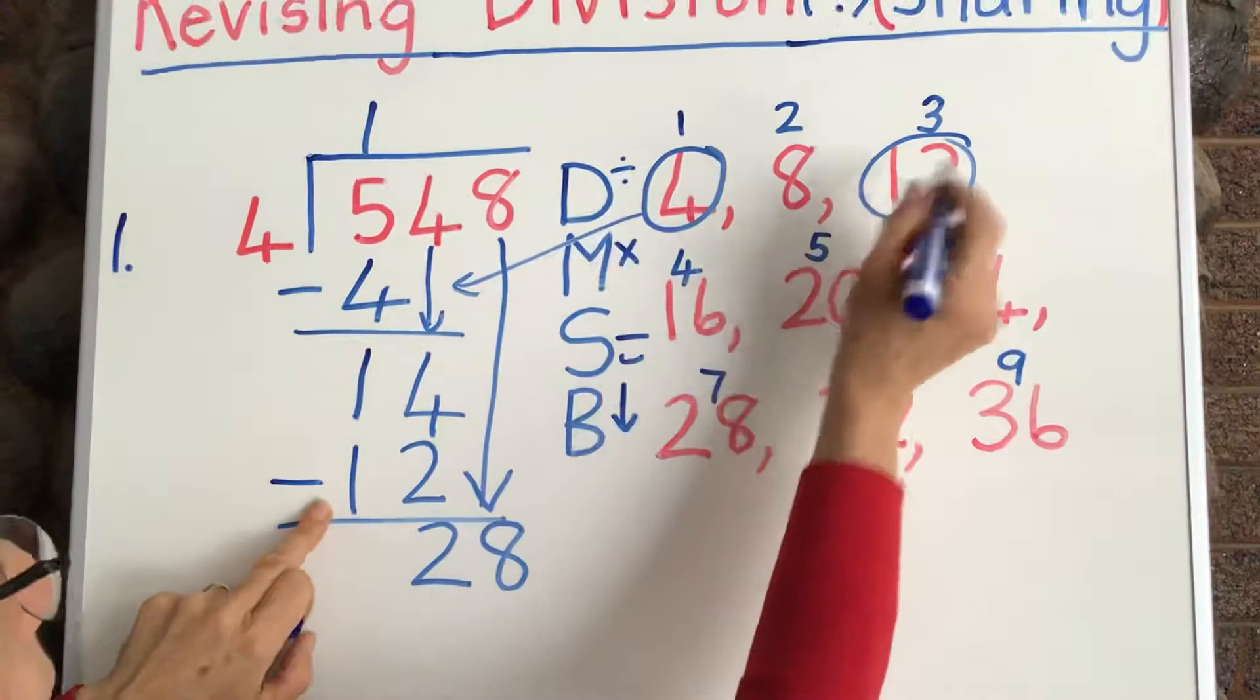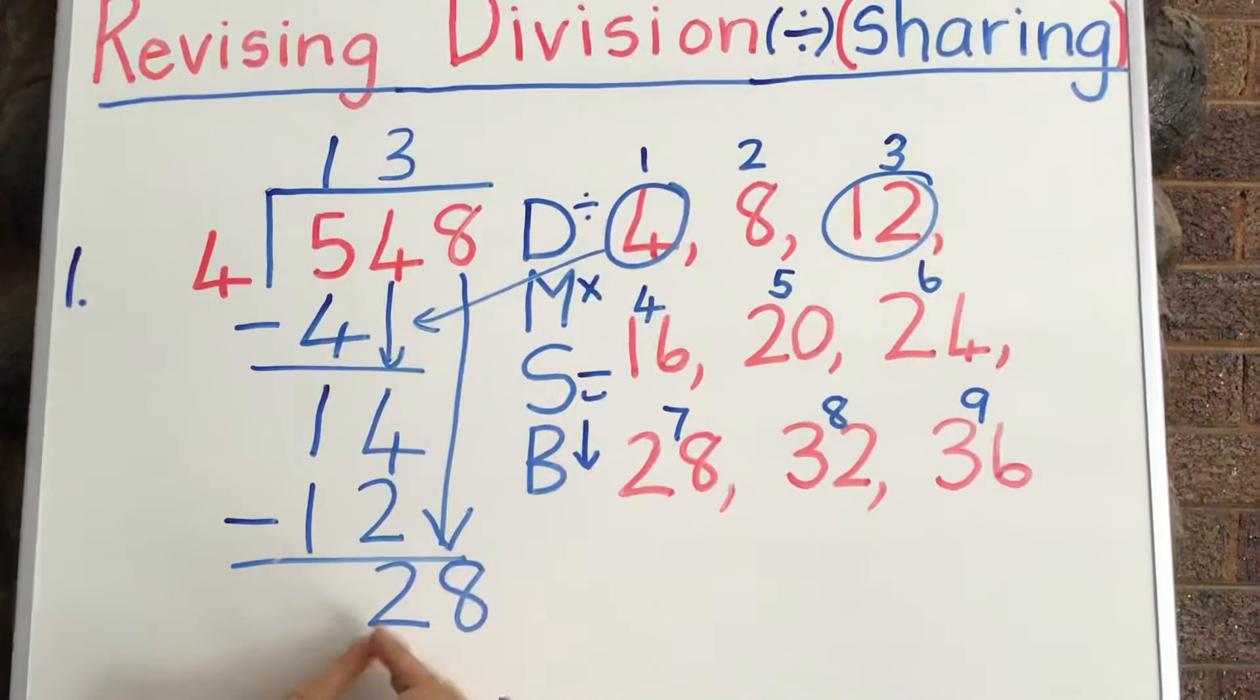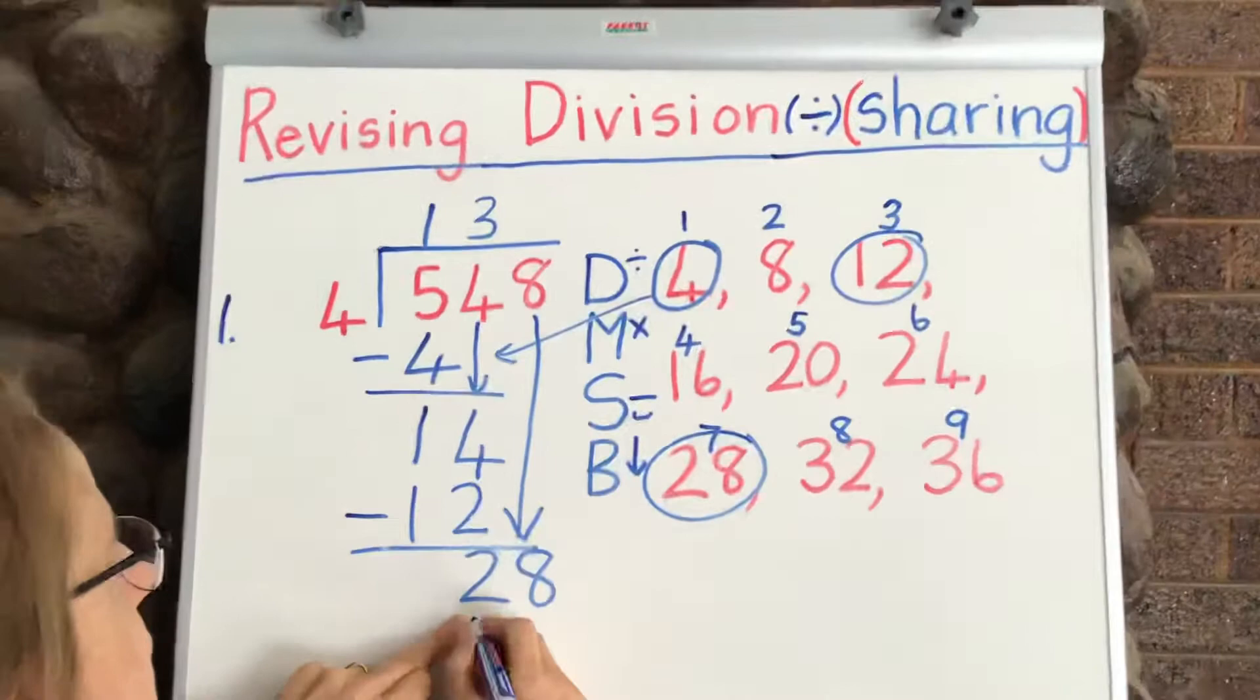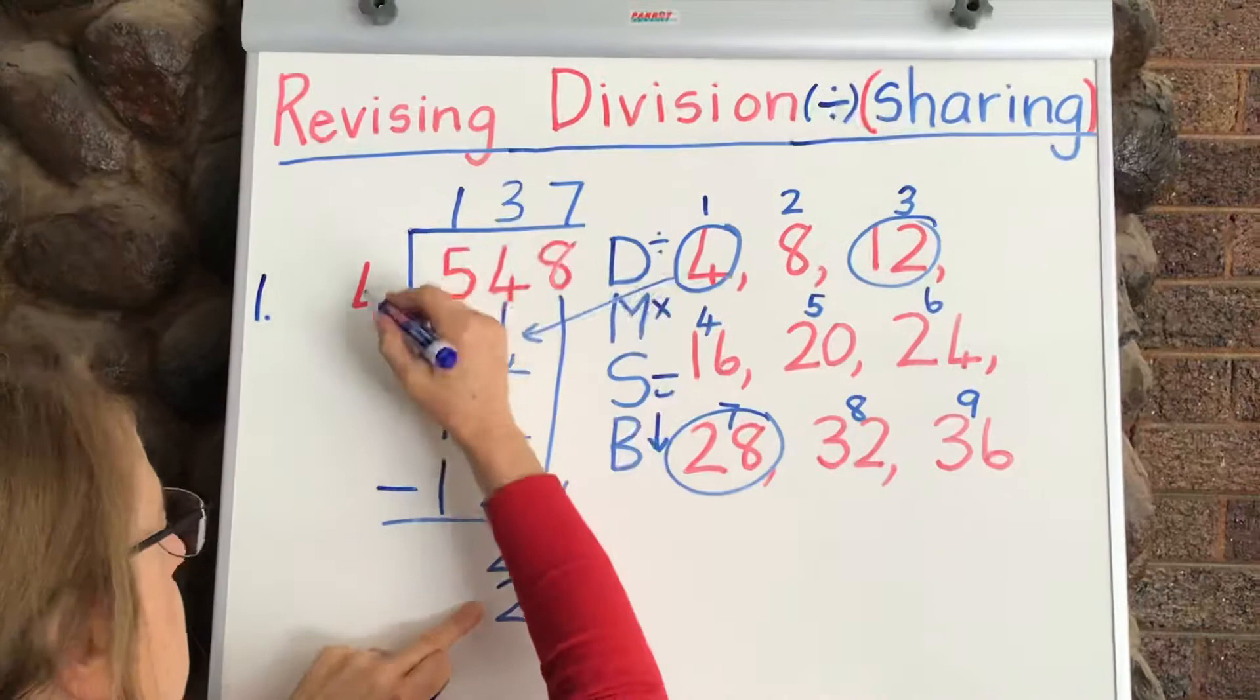What I forgot to do is when we circle our 12, immediately the 3 goes at the top here. The 12 goes there. And now we've got 2 there. Bring down 8. We're looking for 28. Here it is, 28. We're going to put it down.